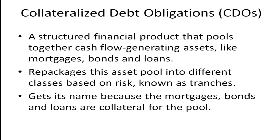At the end of that video I discussed collateralized debt obligations and I want to go into more detail here. These are what are referred to as structured financial products that pull together cash flow generating assets like mortgages, bonds, and loans. They generate cash flow because people are making payments on their mortgages, bonds are receiving interest payments or repayment of principal. The company that creates this CDO repackages this asset pool into different classes based on risk, known as tranches.